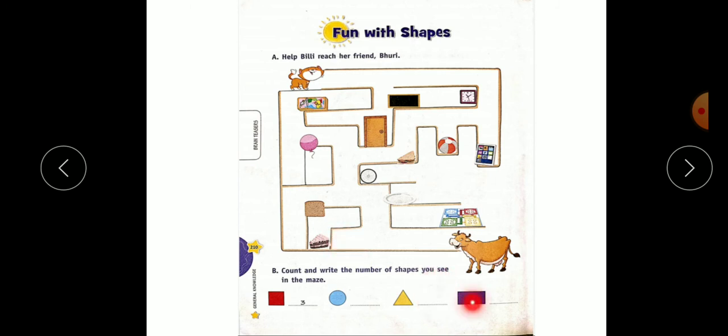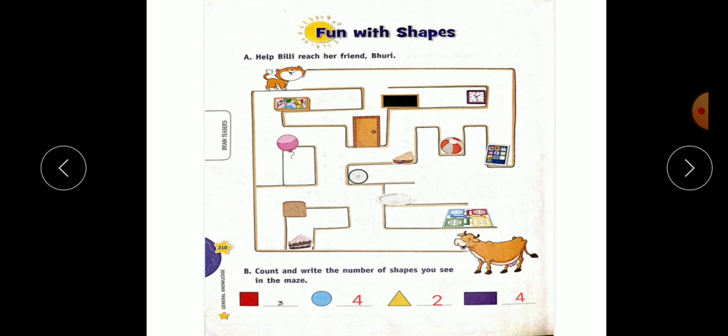Now next shape is rectangle. So count rectangle shapes. One, two, three and four. How many? Four. So aap ko aise yeh poora complete karna hai like this.